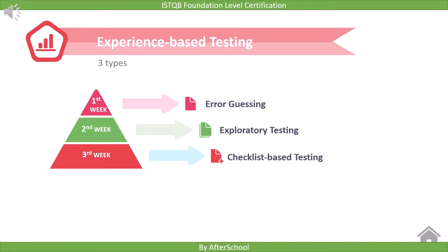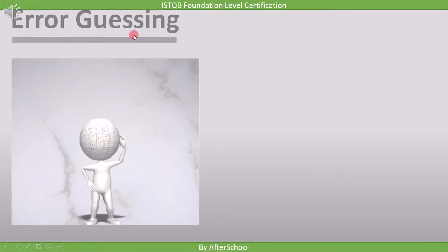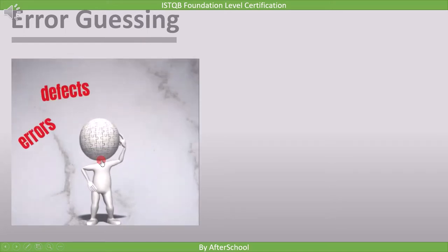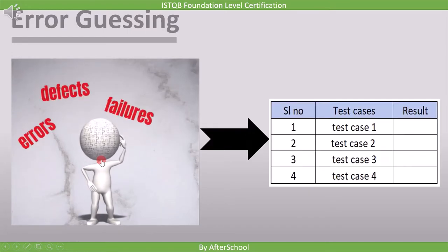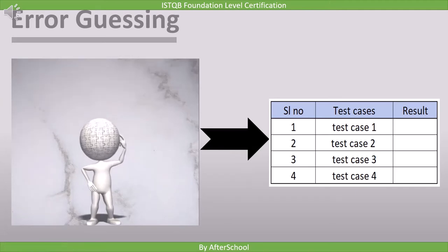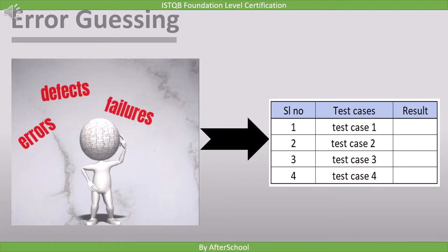We already covered these in a previous chapter; here we will cover them from the point of view of tester skill and knowledge. In error guessing, the tester, based on experience and knowledge, thinks about possible errors, defects, and failures — how the application has worked in the past, what kinds of errors tend to be made, and failures that have occurred in other applications — then lists them to create the test design or test case. The quality of the test case completely depends on the knowledge of the tester.